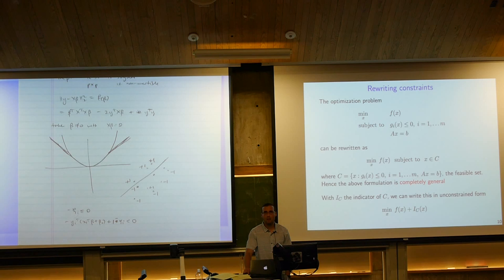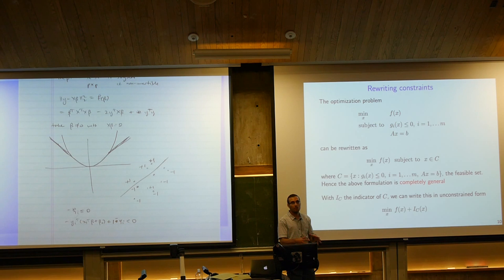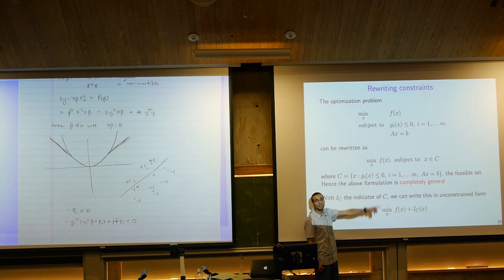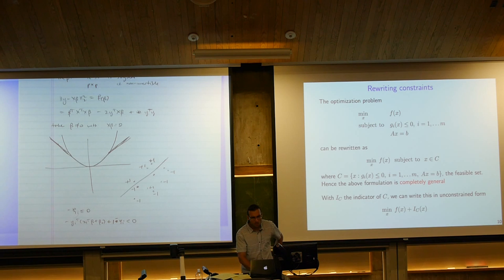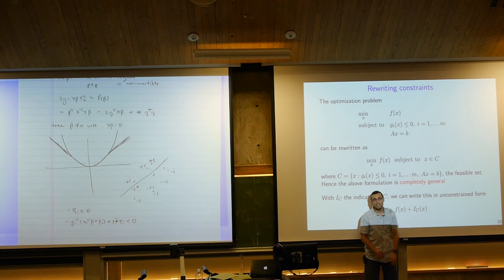Now let's get into transformations we can apply to convex optimization problems. The first: rewriting constraints. We can always take a collection of constraints gᵢ(x) ≤ 0 and Ax = b and encapsulate them into a set C — the set of x satisfying those constraints. Saying x ∈ C is equivalent to all constraints being met.